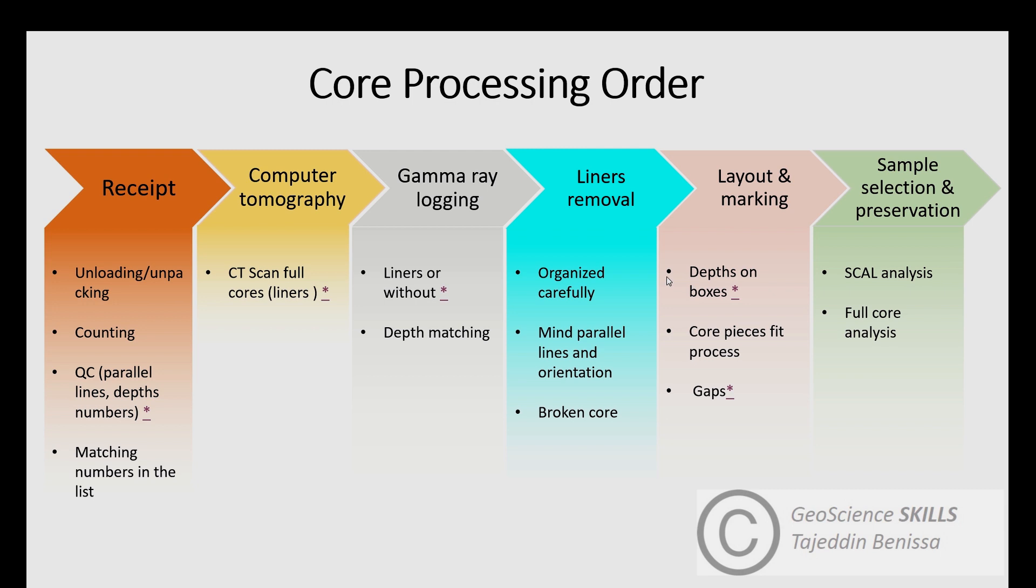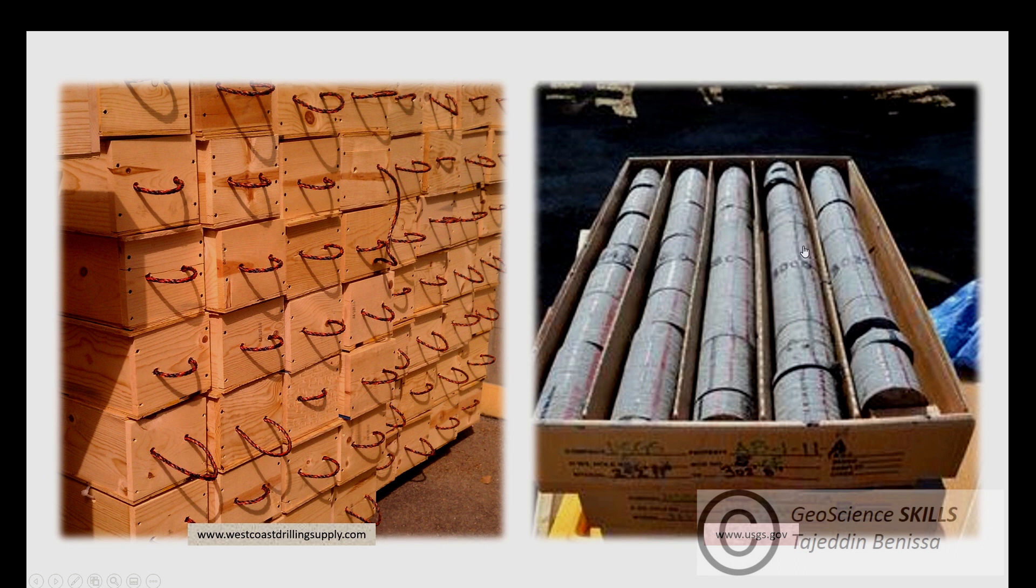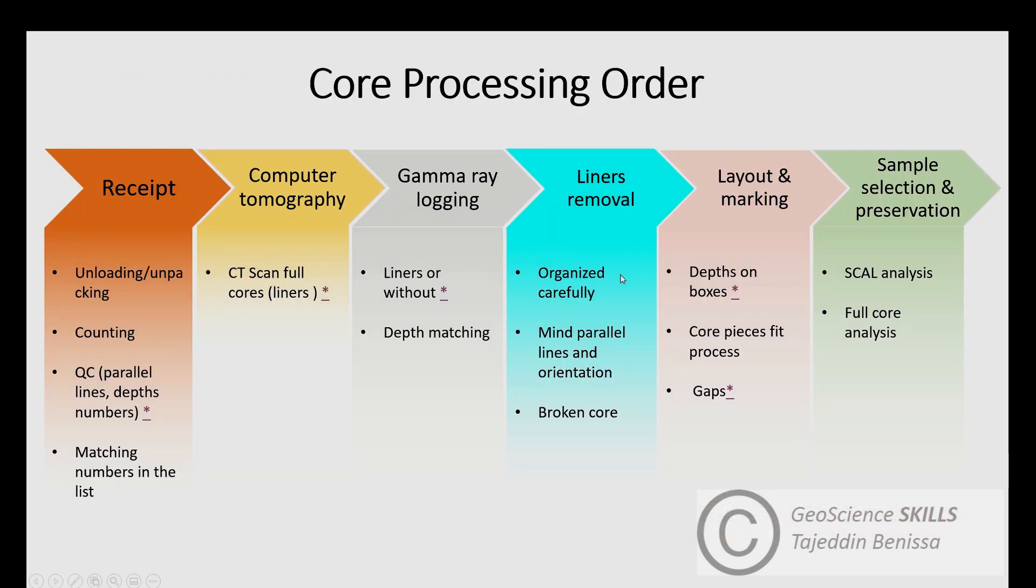Next is layout and marking. In this stage, technicians lay out wooden boxes and mark them with tops, bottoms, and depths. If parallel lines were not drawn by the well site geologist in the field on core samples, then the technician can draw the parallel lines on each sample as they take them out of the tube. It's a very important step and must be done carefully to avoid placing core samples upside down in the box.